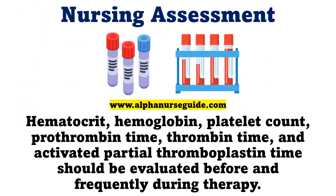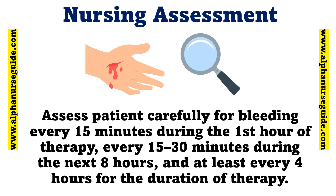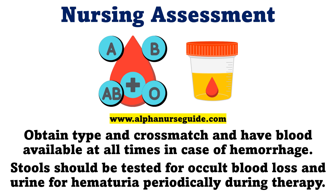Nursing assessment. Hematocrit, hemoglobin, platelet count, prothrombin time, thrombin time, and activated partial thromboplastin time should be evaluated before and frequently during therapy. Assess patient carefully for bleeding every 15 minutes during the first hour of therapy, every 15 to 30 minutes during the next 8 hours, and at least every 4 hours for the duration of therapy. Obtain type and cross-match and have blood available at all times in case of hemorrhage. Stools should be tested for occult blood loss and urine for hematuria periodically during therapy.